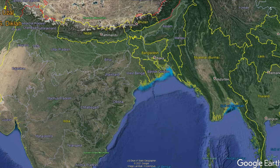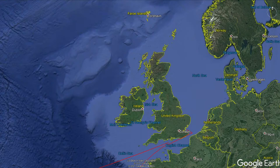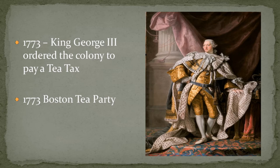We can look at this funny quote by Narayan Singh, an Indian official: 'What honor is left to us when we have to take orders from a handful of traders who have not yet learned how to wash their bottoms?' Robert Clive racked up considerable debt taken on by the United Kingdom, potentially threatening the destruction of the British bank. Rather than take that route, the king raised taxes again to pay this debt — you could call it the financial crisis of the United Kingdom. The EIC was too big to fail, so this brunt was given to the United States, and that happened in 1773.